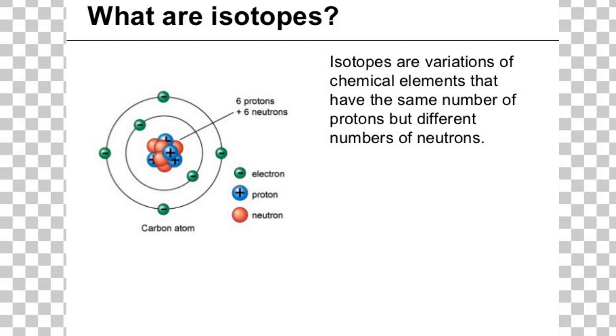Worth remembering: an isotope has a different number of neutrons. I think we've probably got half-life, but let's go through it just a couple more times.